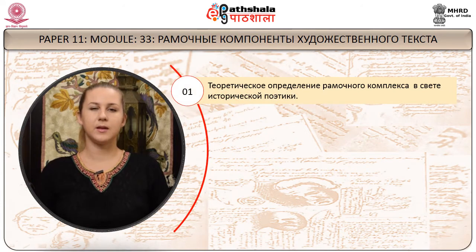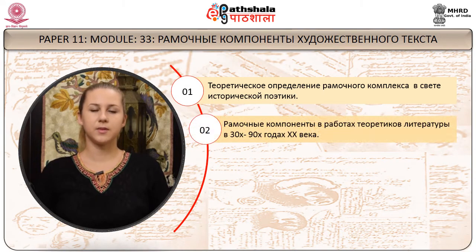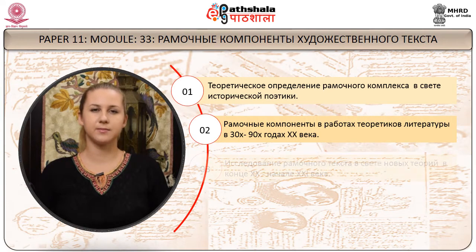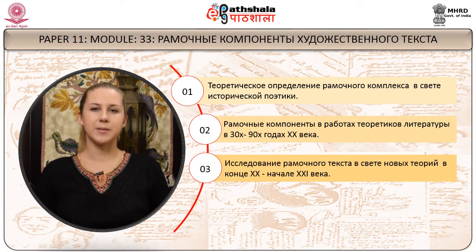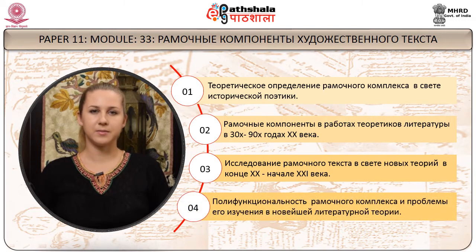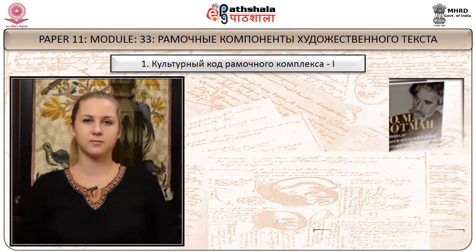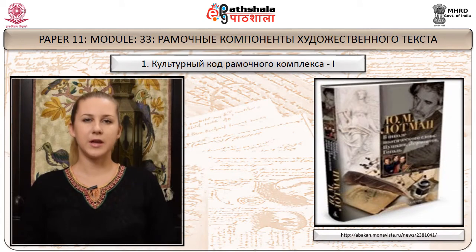Мы рассмотрим сегодня следующие вопросы. Первый: теоретическое определение рамочного комплекса в свете исторической поэтики. Второй: рамочные компоненты в работах теоретиков литературы в 30-х–90-х годах XX века. Третий: исследование рамочного текста в свете новых теорий в конце XX – начале XXI века. Четвёртый: полифункциональность рамочного комплекса и проблемы его изучения в новейшей литературной теории.